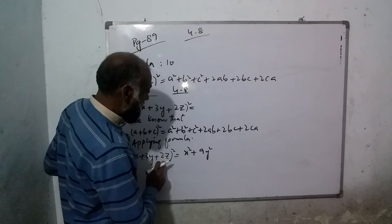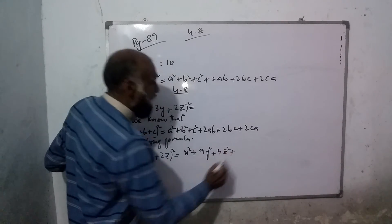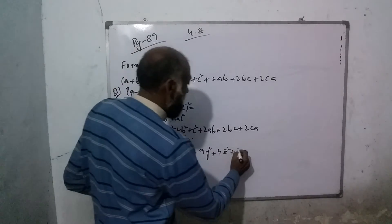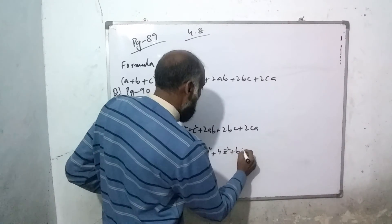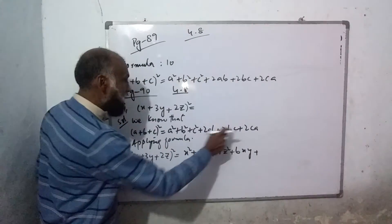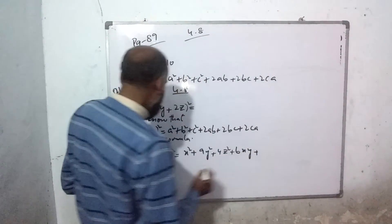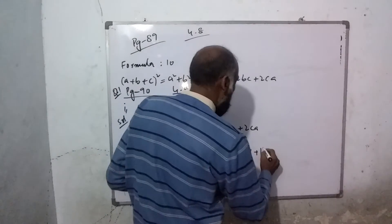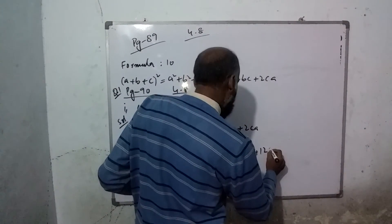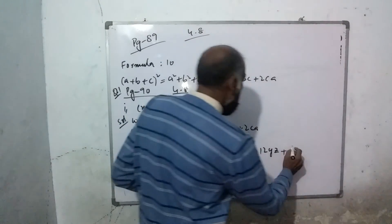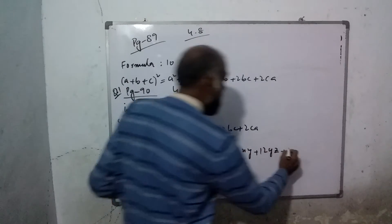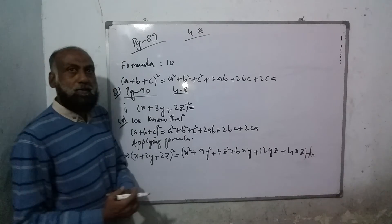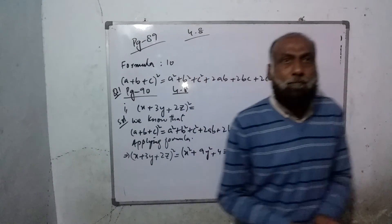We get x² + (3y)² + (2z)² which is x² + 9y² + 4z². Then 2ab is 2(x)(3y) = 6xy. 2bc is 2(3y)(2z) = 12yz. And 2ca is 2(2z)(x) = 4xz. Now we solve it.